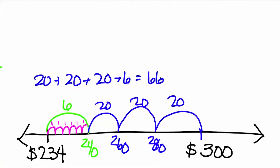I can add all my jumps to see that they total $66, which is the same as our constant difference answer. Not all subtraction problems lend themselves to using the counting up strategy, but this one worked nicely.